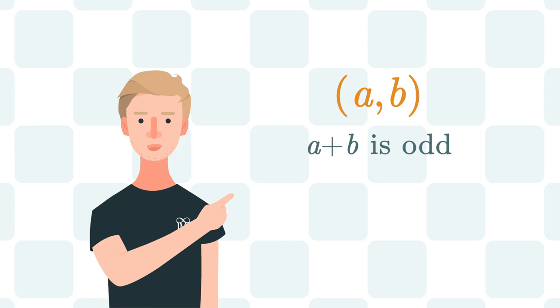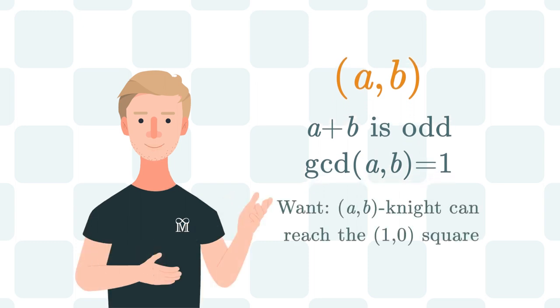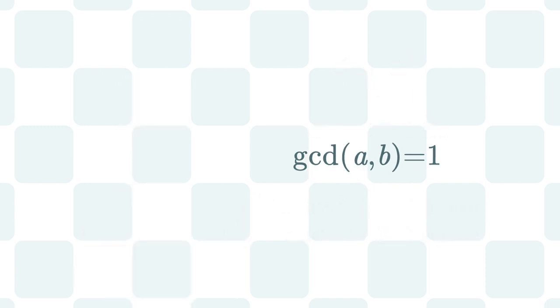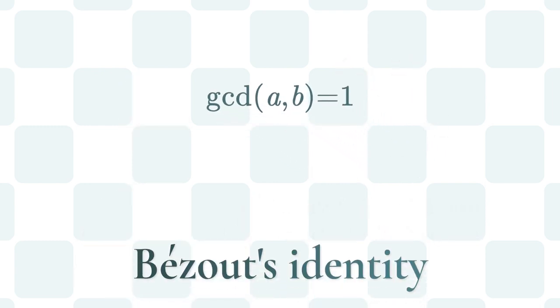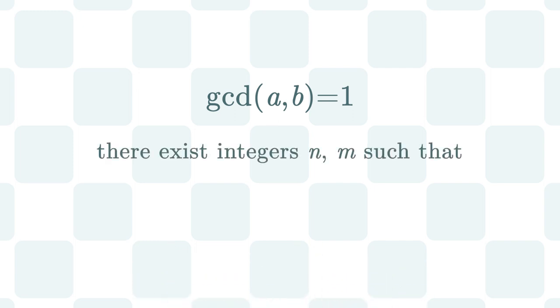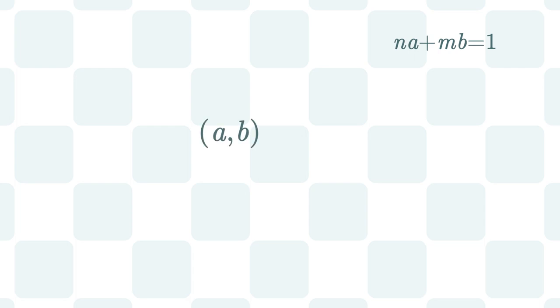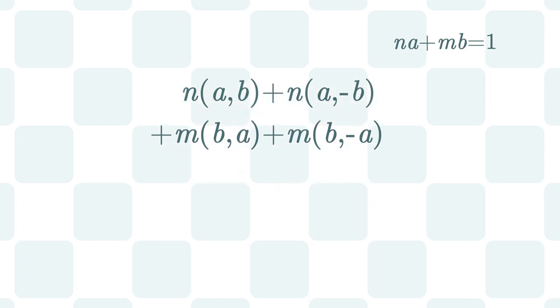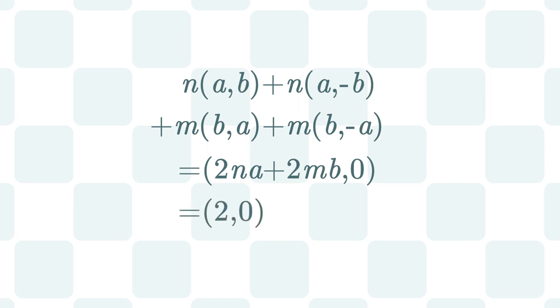Okay, so we assume that we have a pair of integers a,b such that a plus b is odd, and greatest common divisor of a and b is equal to 1. And we want to show that a,b Knight can reach the 1,0 square. Since greatest common divisor of a and b is equal to 1, then by Bezout's identity, there exists two other integers n and m such that n·a plus m·b is equal to 1. Now let our a,b Knight do a,b move n times and also a minus b move n times. Then b,a move m times and also b minus a move m times. Adding these moves together we acquire a 2n·a plus 2m·b, 0 move, which by the definition of n and m is just a 2,0 move.